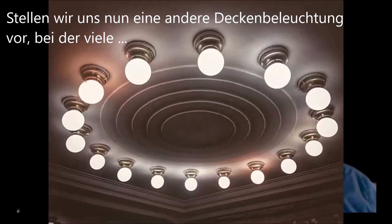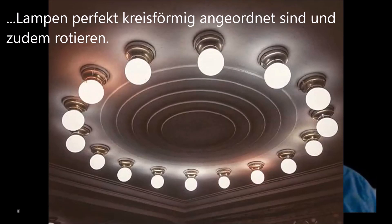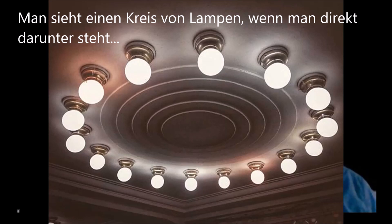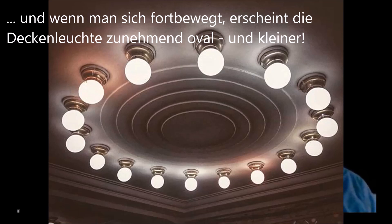Now, imagine instead of a series of solid single circular light fixtures, you had one comprised of many lights arranged in a perfect circle and rotating. Again, you see a perfect circle of lights when you look up from directly underneath. And as you slowly back away, they appear more and more acutely oval and smaller.